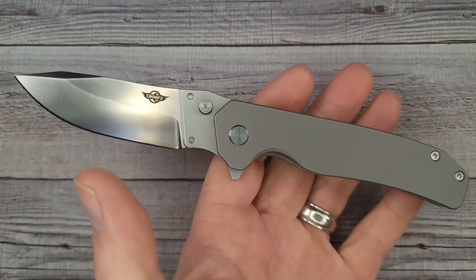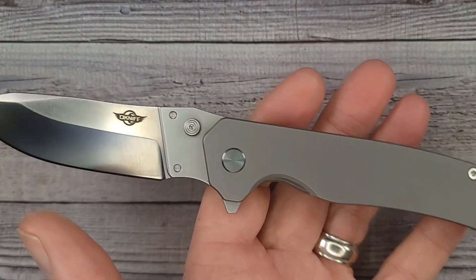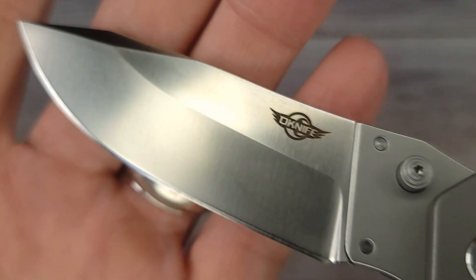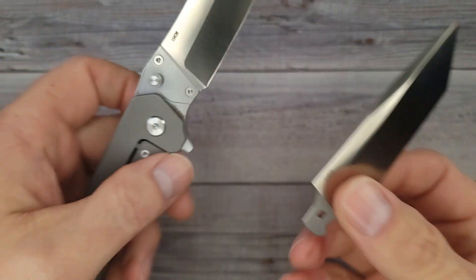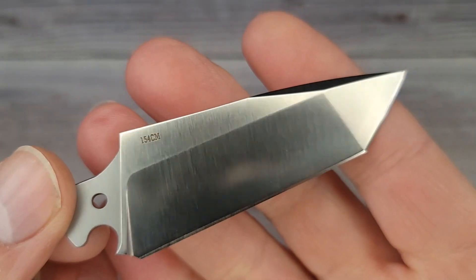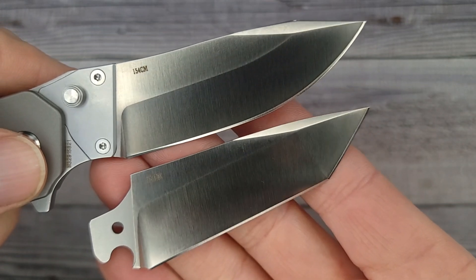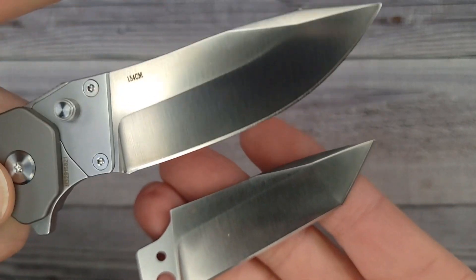This bad boy is the Freeze 4 in titanium. Look at this, check out that blade - 154CM blade steel. If you don't like that blade shape you can put this one on. Isn't that the coolest thing ever that you have options? You can have one sharpened while you're using one and you can switch them out.